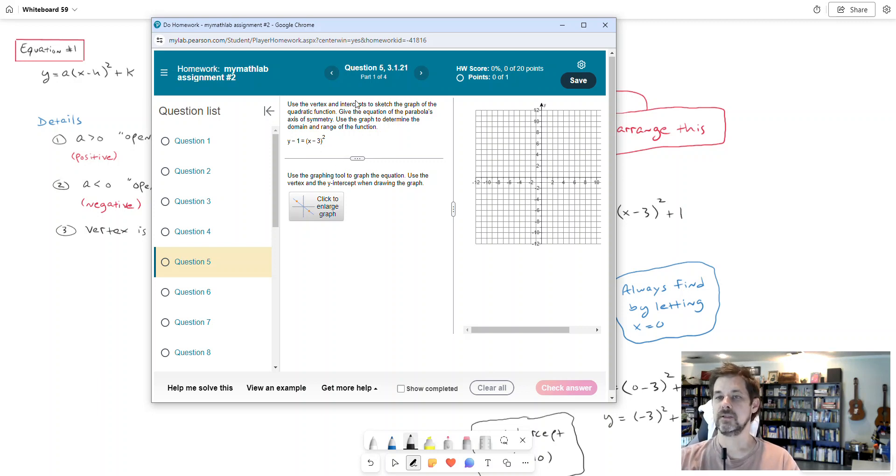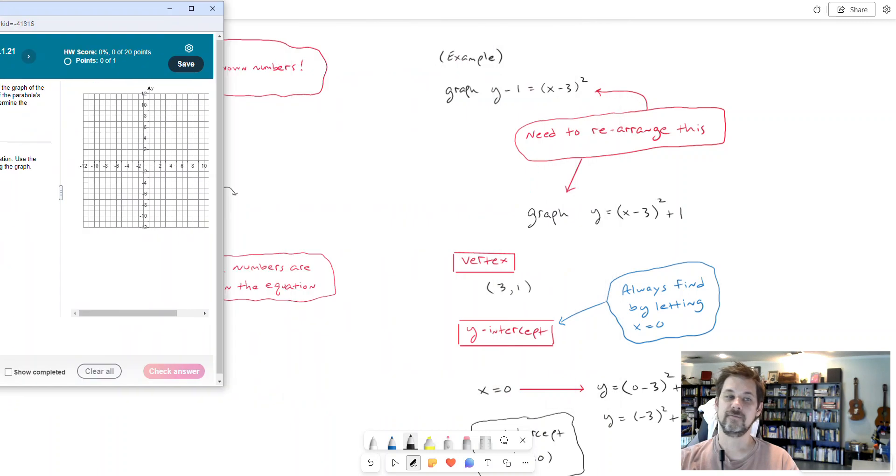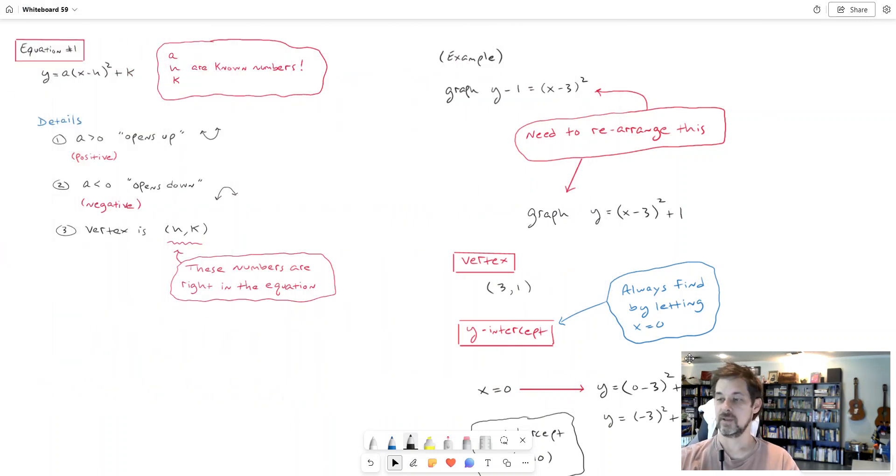So it says here to use the vertex and intercepts to sketch the graph of this, which we'll do on this graphing tool over here, specifically use the vertex and the y-intercept when drawing the graph. So this is the question that I want to do. I have written it on my whiteboard though,